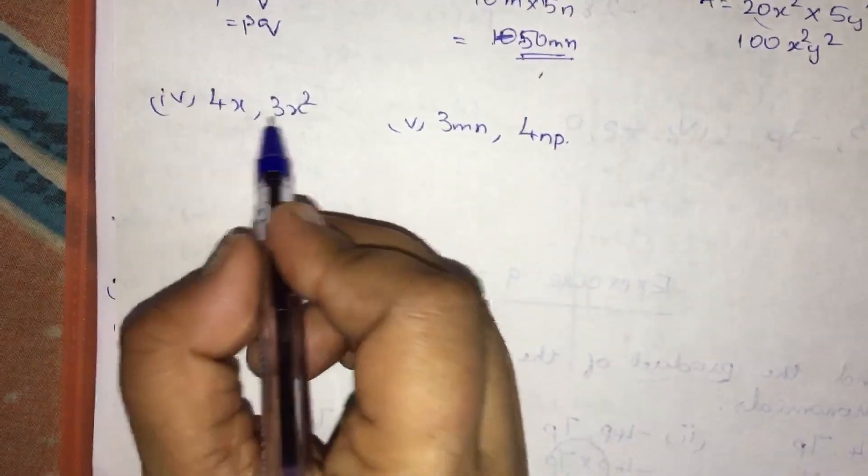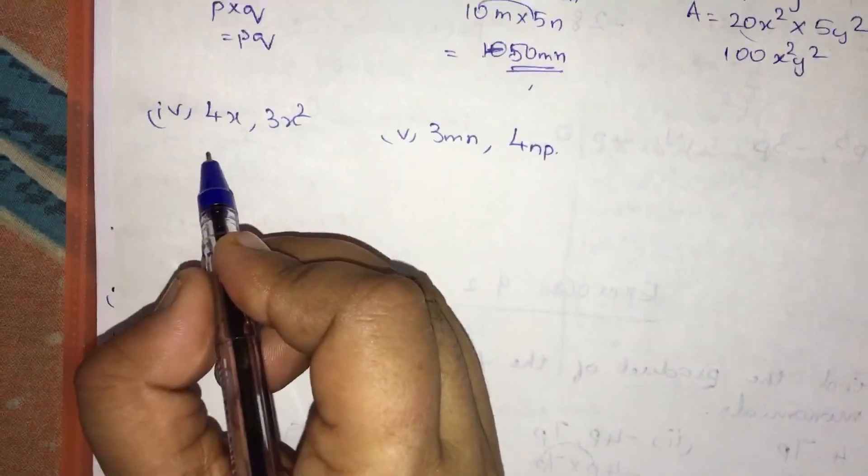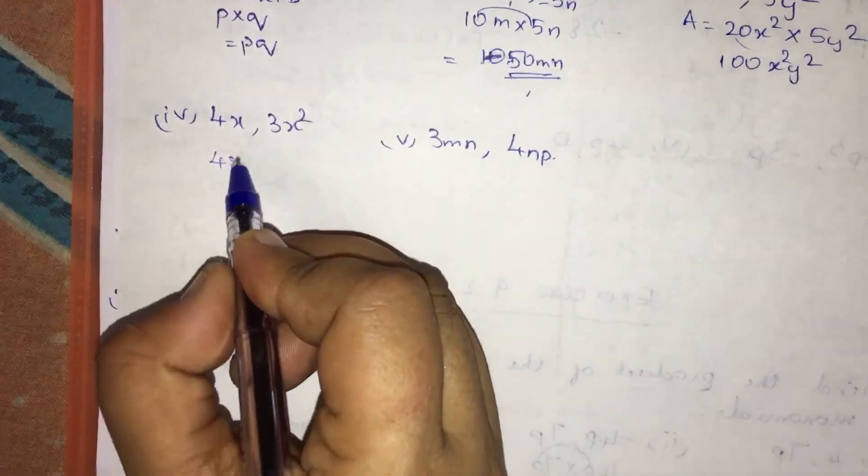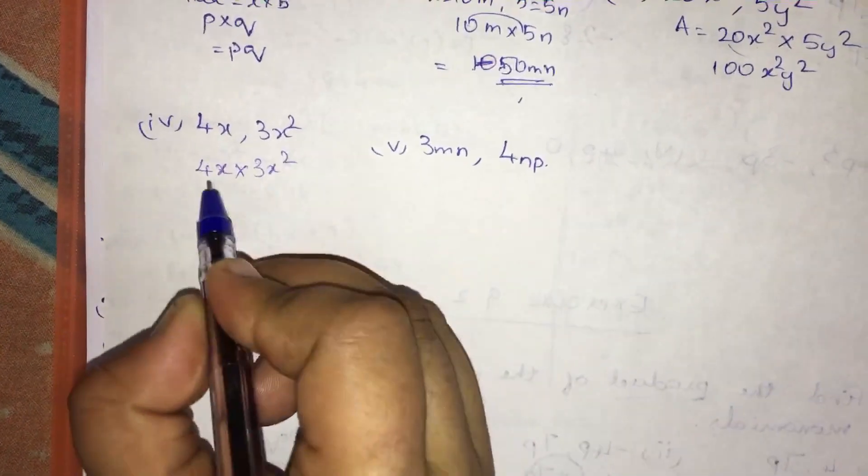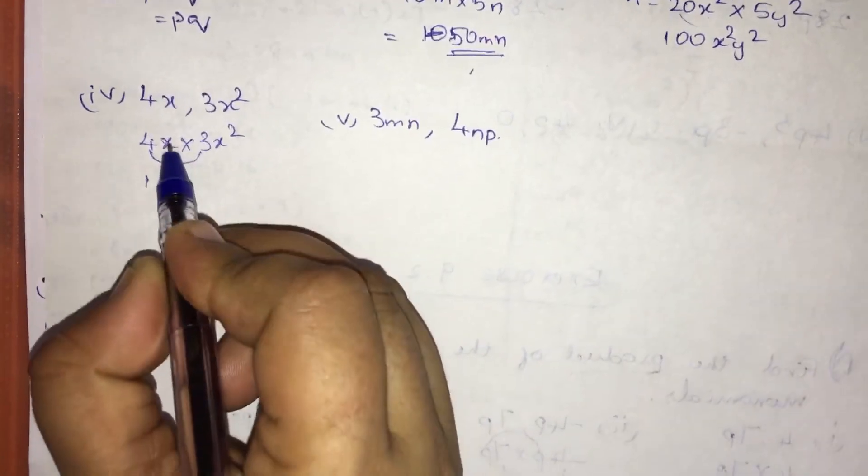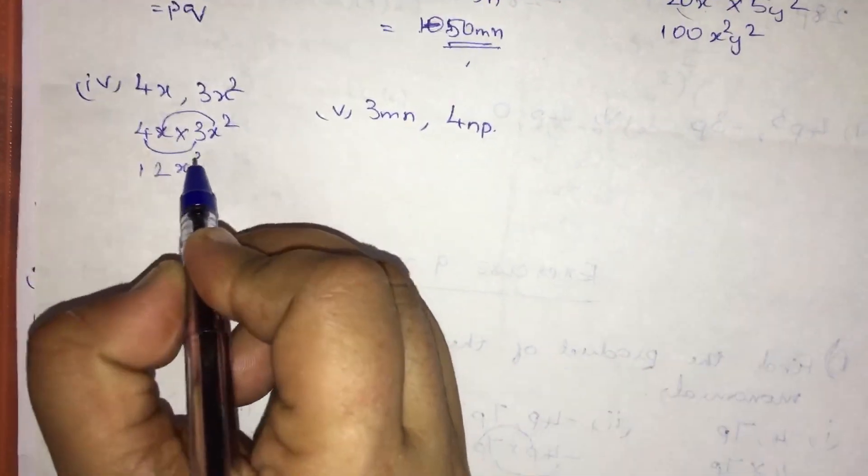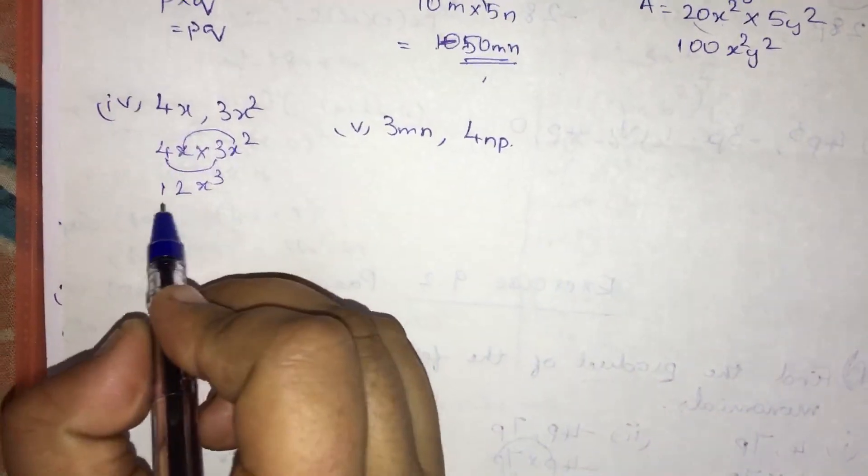4x, 3x square. Area is equal to 4x into 3x square. 4 into 3 is 12, x into x square is x cube. So the area is 12x cube.